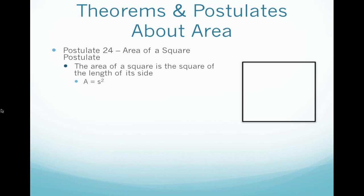The first postulate is Postulate 24, which is the area of a square postulate. This postulate simply states that the area of a square is the length of its side squared. So if we have a square with a side length of s, with a square we know all four sides are congruent, so the area is going to equal s squared.